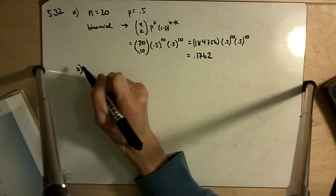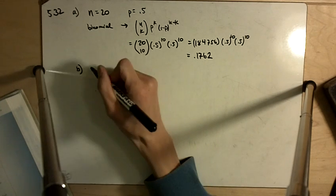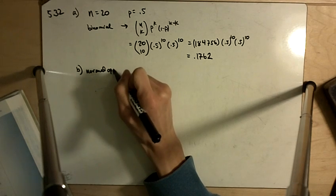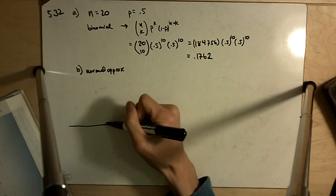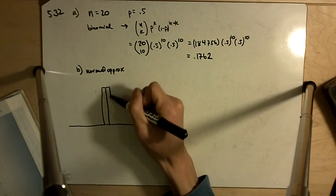That's using the binomial. Part B says normal approximation. The normal approximation says we're going to take the binomial distribution which might look something like this.